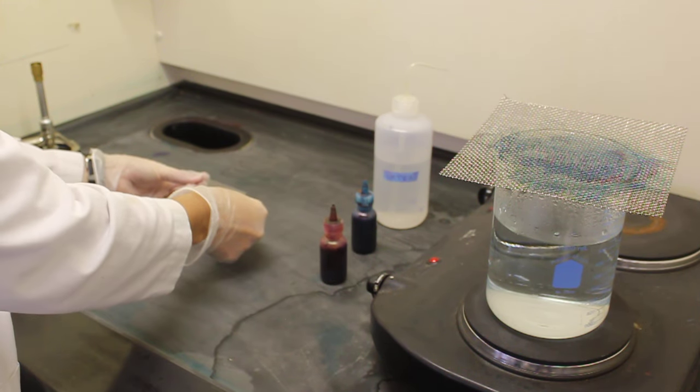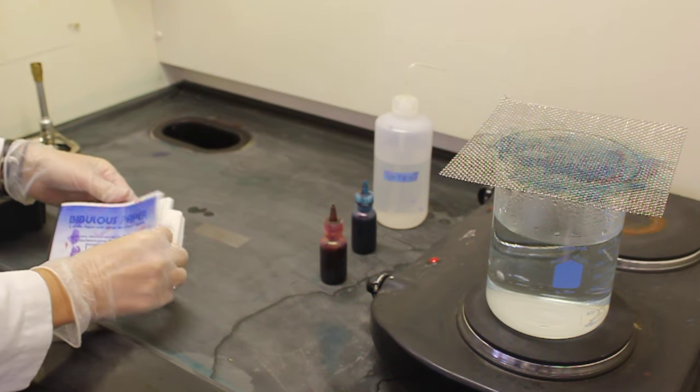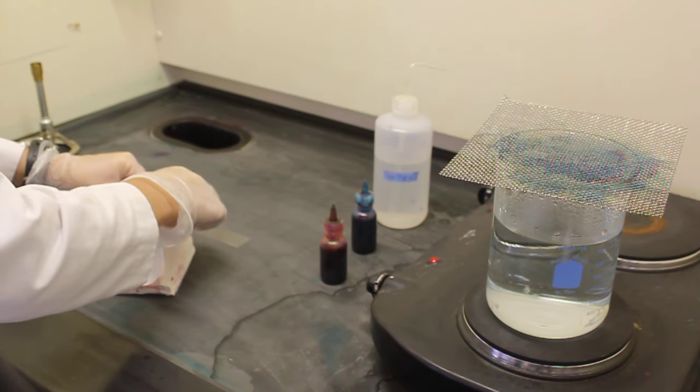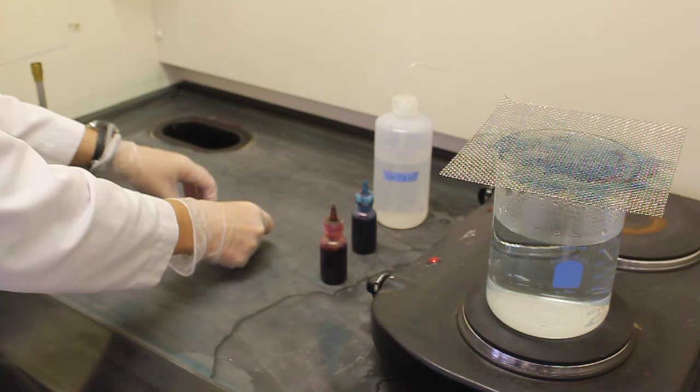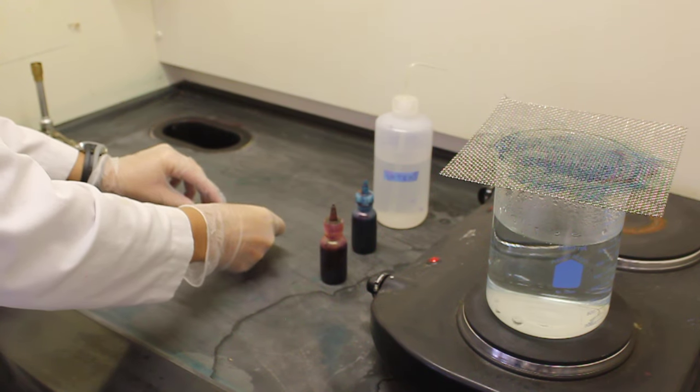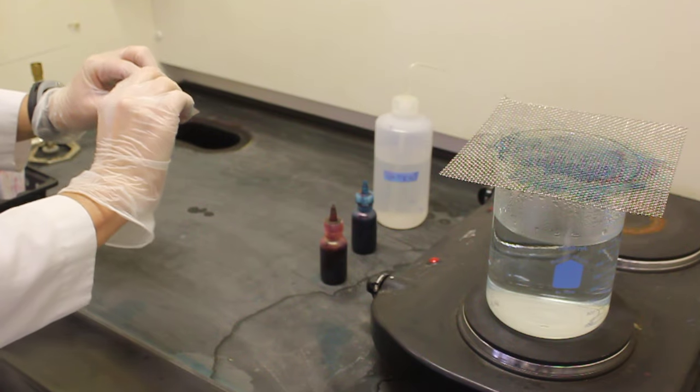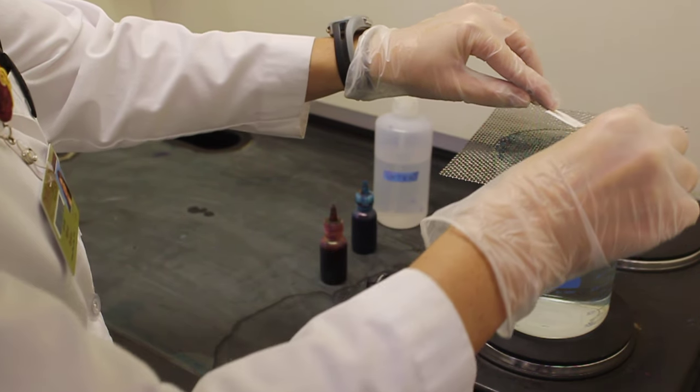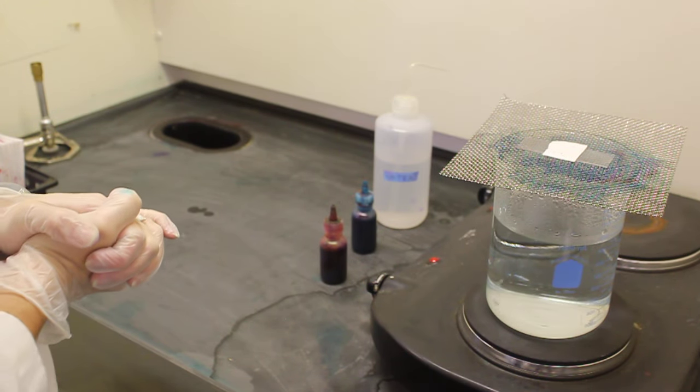To begin our procedure, I am going to get a small piece of bibulous paper and place this on top of the area that I have previously smeared and heat-fixed. I then place the heat-fixed slide and the bibulous paper on top of the steaming hot plate.